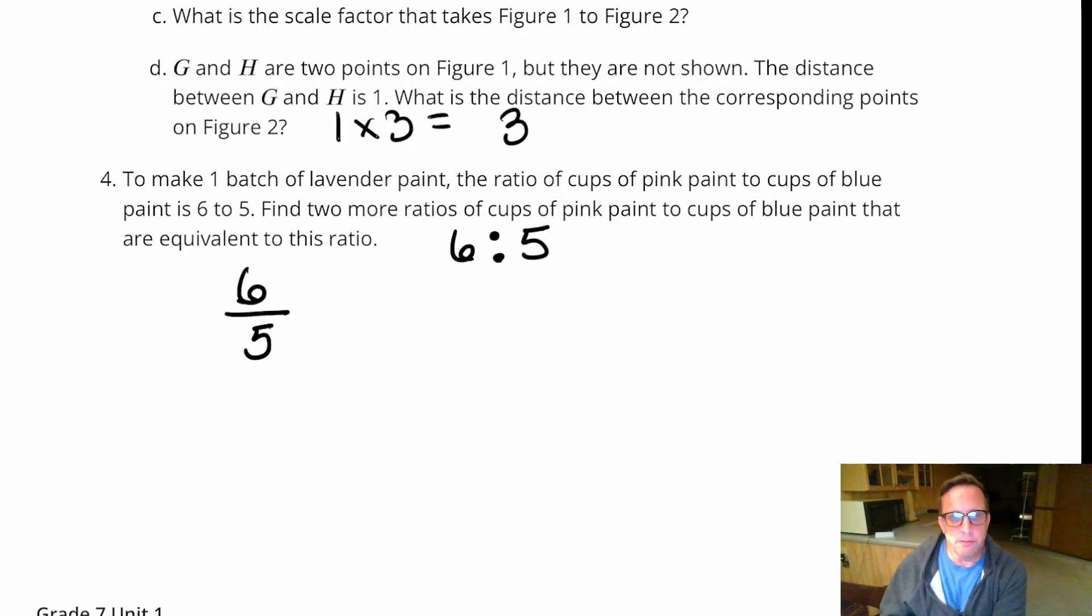Now, let's just say I double it. So, if we double it, we're going to end up with 12 to 10. Six times two and five times two.